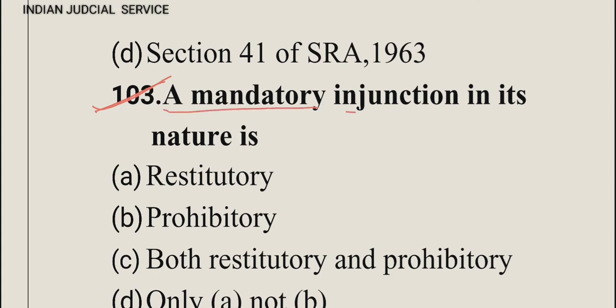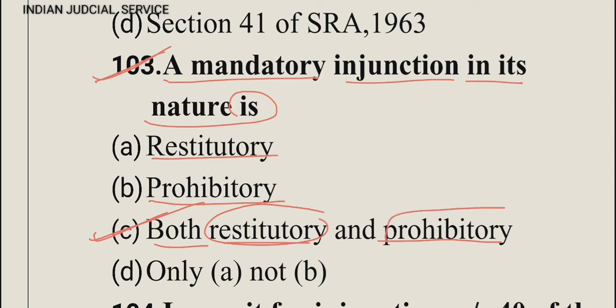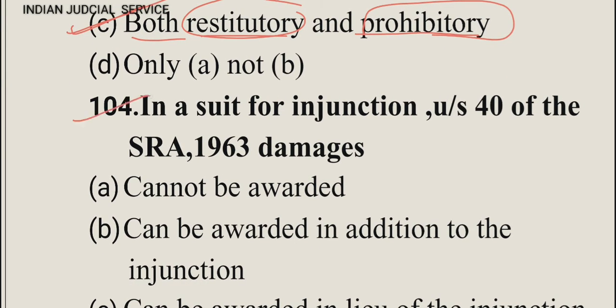Question number 103: A mandatory injunction in its nature is — option A: restitutory, option B: prohibitory, option C: both restitutory and prohibitory, option D: only A not B. The answer is option C — both restitutory and prohibitory.